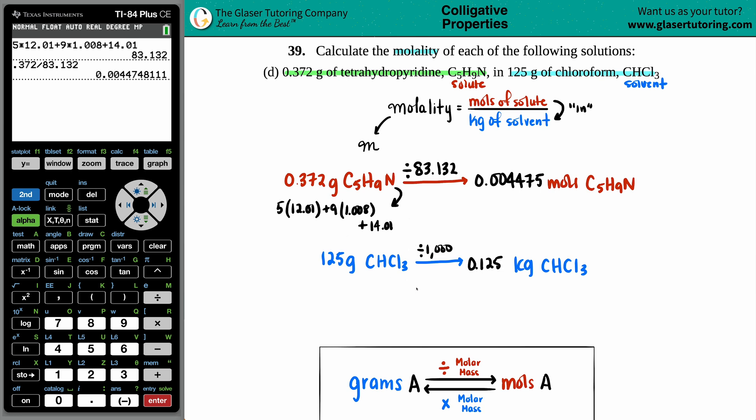And now we have the moles of the solute and the kilograms of the solvent. So we can find out the molality. And let's see. So the moles was the 0.004475 divided by the kilograms, which is the 0.125. I'm just going to take the whole number here for the moles. And I'm going to divide it by 0.125.